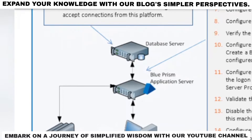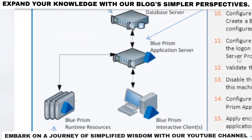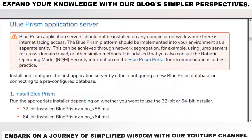Here we can see that the Blue Prism application server is connected with the database server, and also with the Blue Prism interactive client and Blue Prism runtime resource, because this is a centralized system. If the Blue Prism interactive client needs some data from the database server, it will go to the Blue Prism application server, which will then get the data from the database server and provide it back to the Blue Prism interactive client.